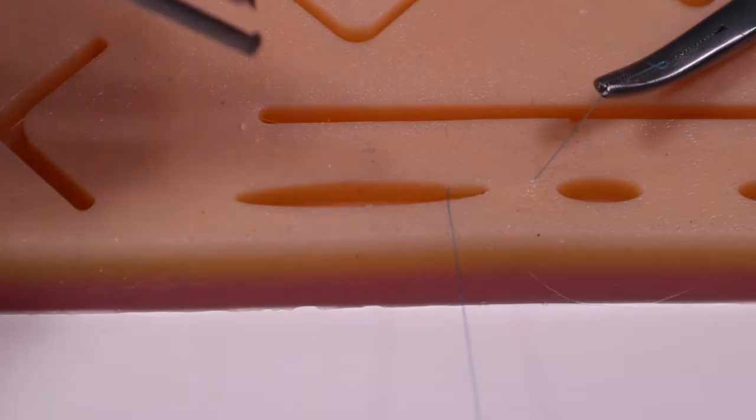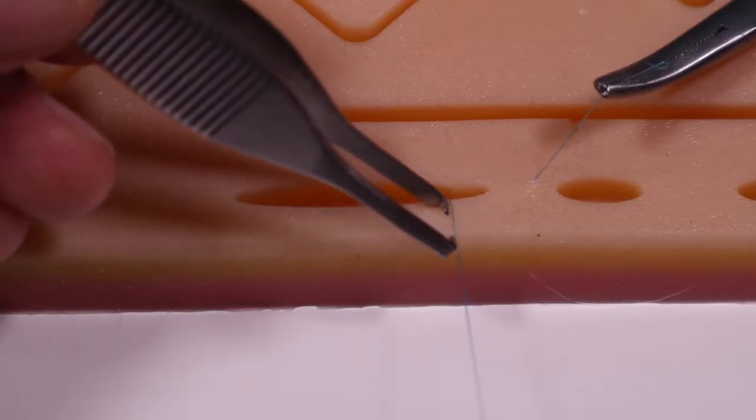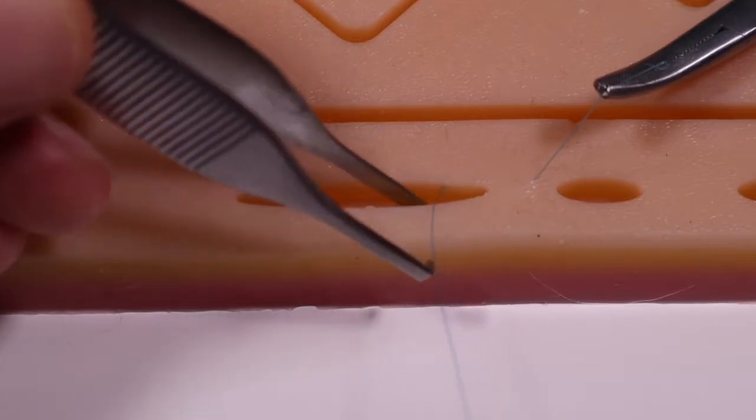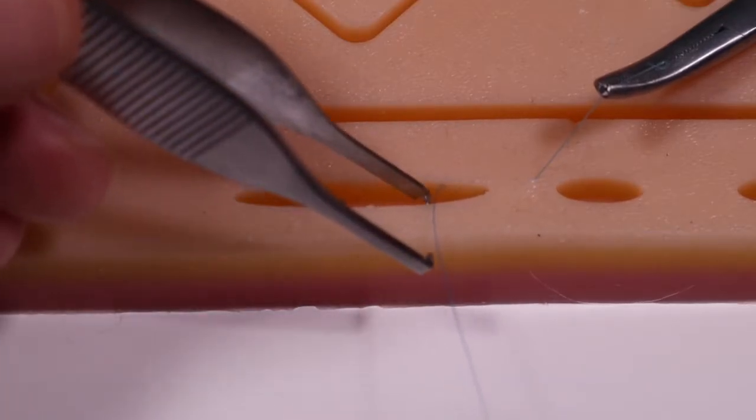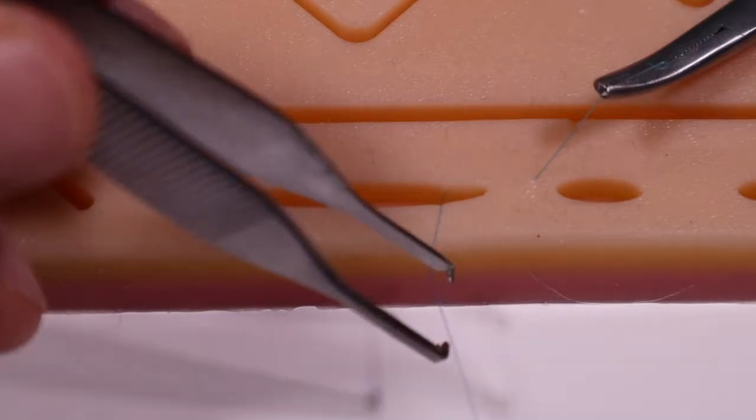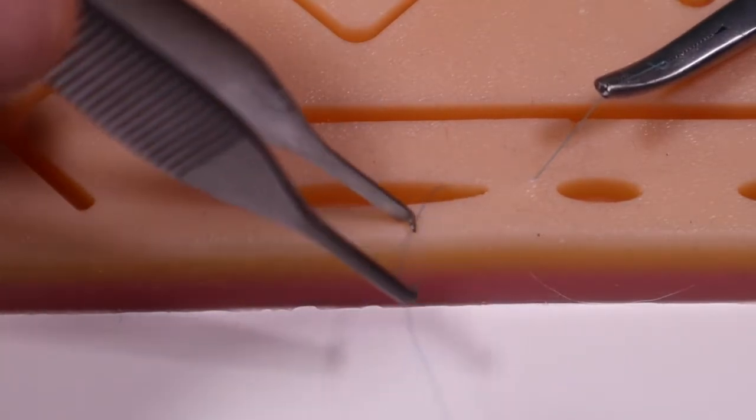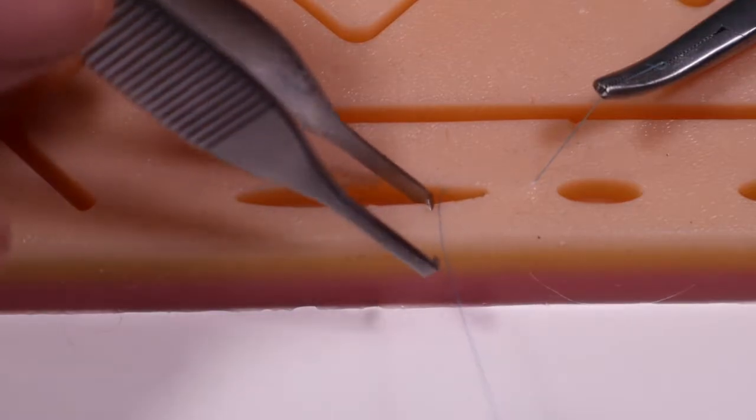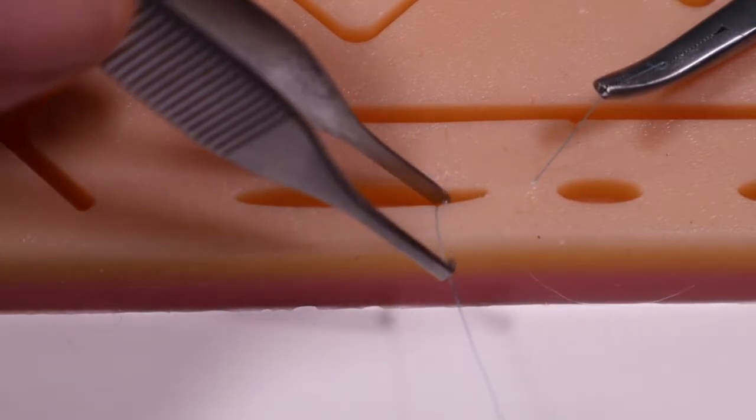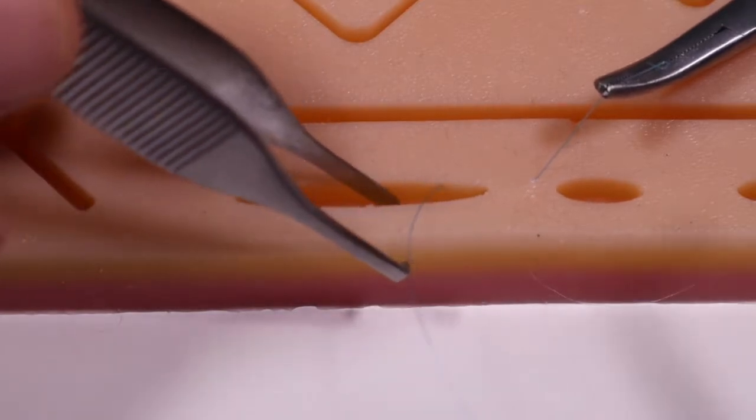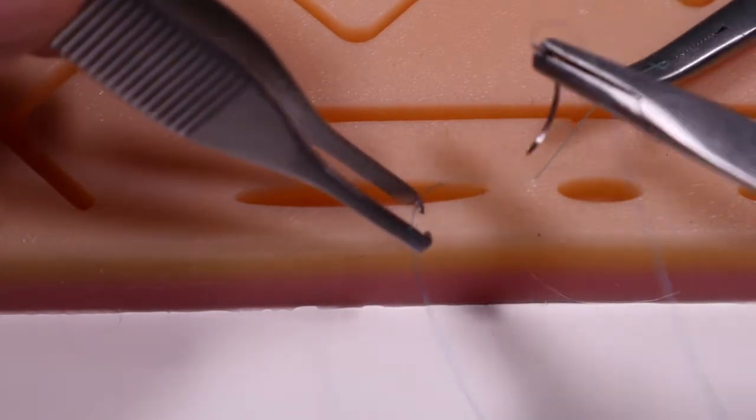Because our suture entering on the proximal side, we want to be at the same level of the exit on the far side. Sometimes if you're using a reverse cutting needle, that'll cut through the skin and it'll actually leave it more diagonally. So a way you can avoid doing that is start your entry point just behind that perpendicular line. So that's what we'll do now.